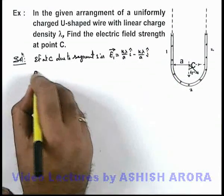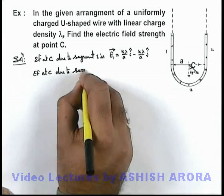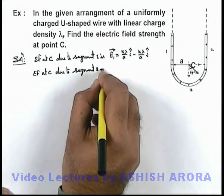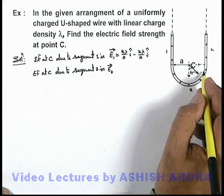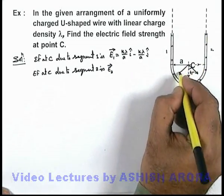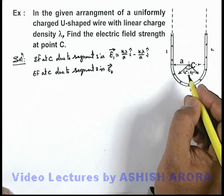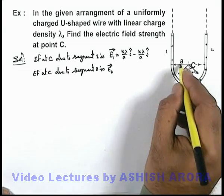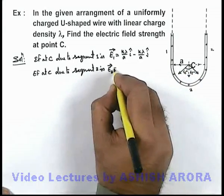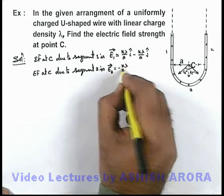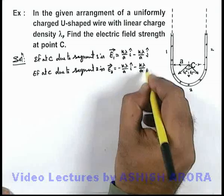Similarly, the electric field at C due to segment 2, E2 vector, is directed at an angle of 45 degrees from the vertical line. Its x and y components are also k·λ/a each. So E2 vector equals minus(k·λ/a) i-cap minus (k·λ/a) j-cap.